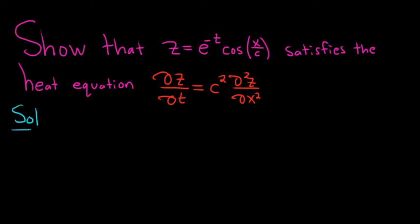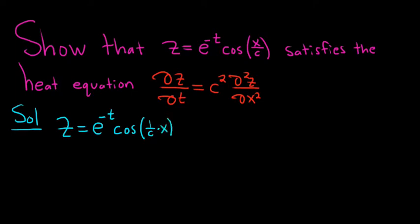So basically, all we have to do is take the partials and plug them into this equation and just verify that it's true. Before we take the partials, I'm going to rewrite this function in a way that might make it a little more convenient. So we have e to the negative t, and we can write the inside piece of cosine as 1 over c times x. Here, c is a constant, so it's like a number times x. So if we take the derivative of this with respect to x, it would just be 1 over c on the inside.